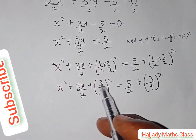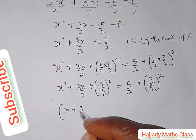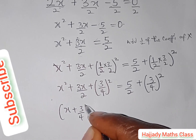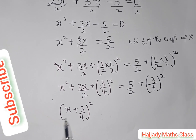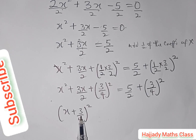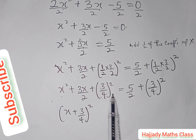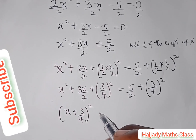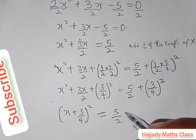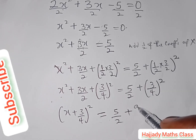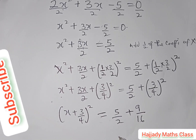The left-hand side simplifies to (x + 3/4)². You can confirm this by expanding the bracket — writing it twice and expanding gives back the same expression. So (x + 3/4)² = 5/2 + (3/4)². Since 3 raised to power 2 gives 9 and 4 raised to power 2 gives 16, the right-hand side has 5/2 + 9/16.